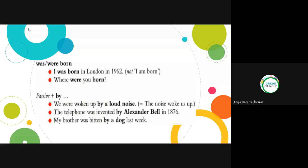Then we have 'was/were born.' With the verb 'to be born' we always use passive voice. Depending on the person, it will be 'was' or 'were.' For example: 'I was born' plus the place and date. To ask someone: 'Where were you born?' And for third person singular: 'He/she/it was born' plus the date.